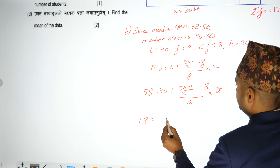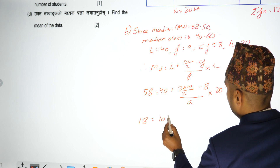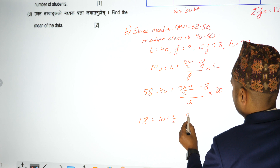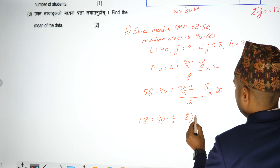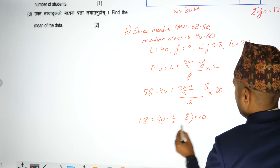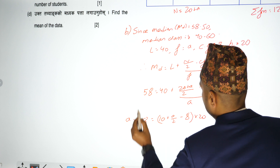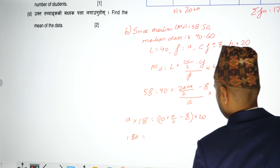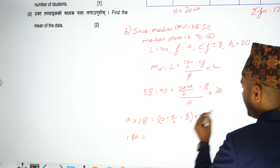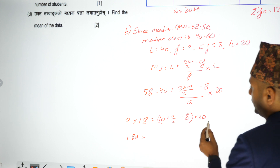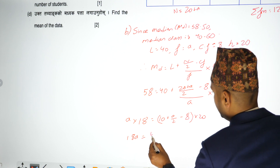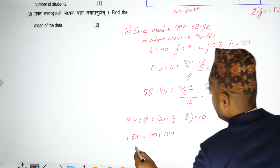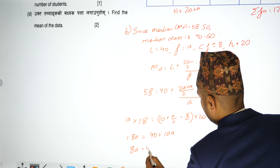10 plus A by 2 minus 8, and A into 20, and A into A. So 18A equals to 18A. 10 minus 2, 10 minus 8 equals 2. 2 into 20 equals 40, plus A by 2 into 10 gives 10A. Therefore 8A equals to 40.